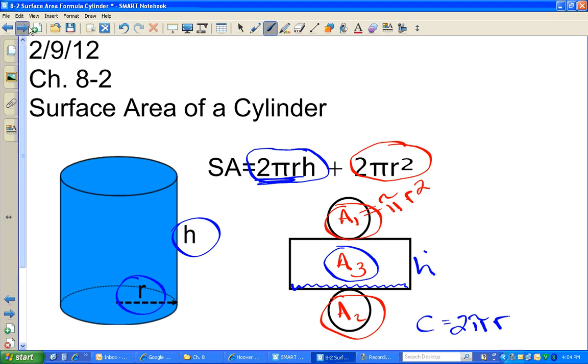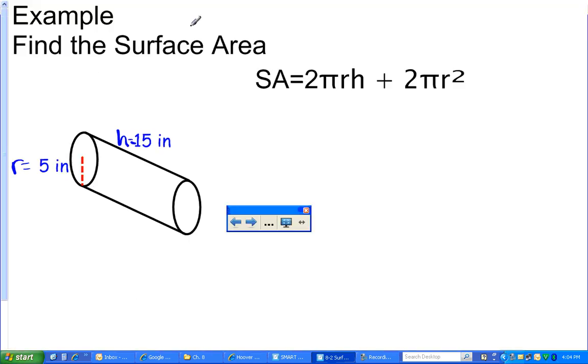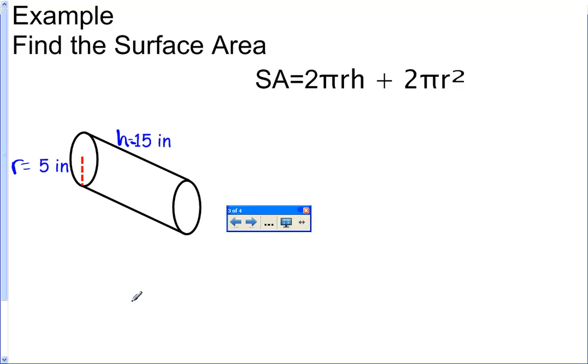So let's look at an example. We have this cylinder with a radius of 5 and a height of 15.